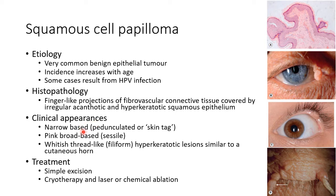Coming to the clinical appearances, patients can present with narrow-based pedunculated or skin tag-like lesions, as you can see in this picture. They can also present as pink broad-based or sessile lesions. They can also present with whitish thread-like hyperkeratotic lesions, which are known as filiform lesions, which is similar to a cutaneous horn.